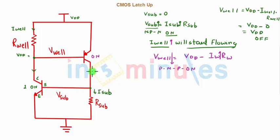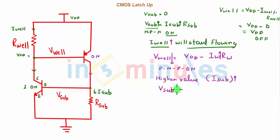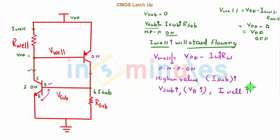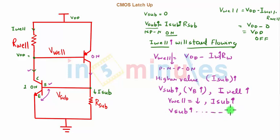Now the PNP transistor turns on, which leads to a higher value of current — in this case, I_sub increases. This increase in I_sub further leads to V_sub increasing, which is the base voltage of the NPN transistor. An increasing base voltage means more forward biasing (since the emitter is grounded), which leads to more collector current — which is I_well. As I_well increases, V_well further reduces, which causes I_sub to increase again.